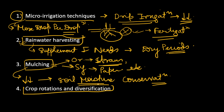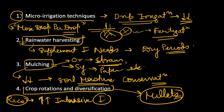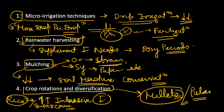We can do crop rotation and diversification. Since the green revolution, we have been mostly dependent on crops such as rice and paddy, which require very intensive irrigation with high amounts of water. Instead, we can diversify and shift to crops such as millets and pulses, which require less water compared to rice or sugarcane. These also help in replenishing the fertility of soils. So crop rotation and diversification can be very helpful.